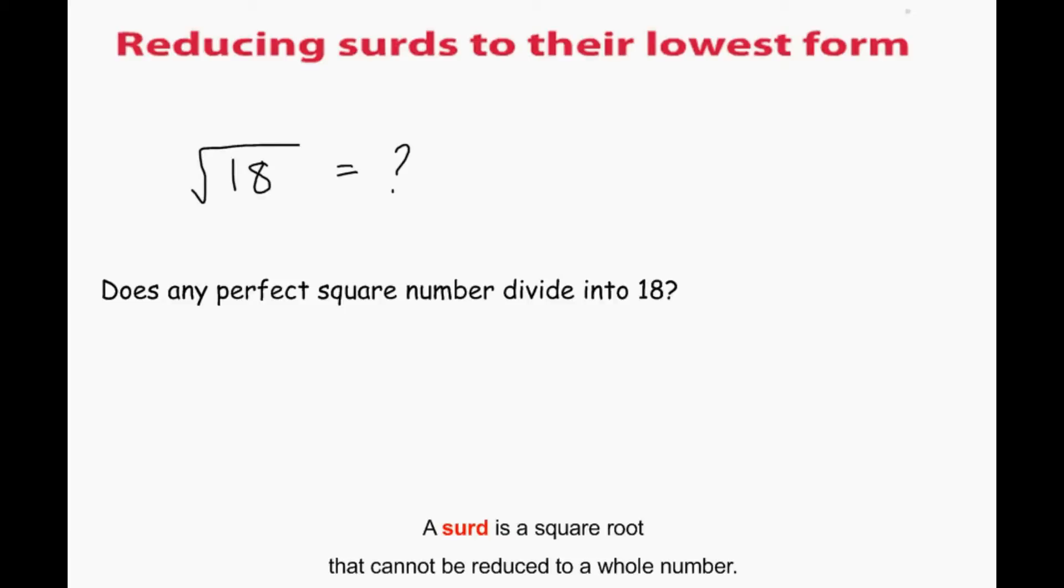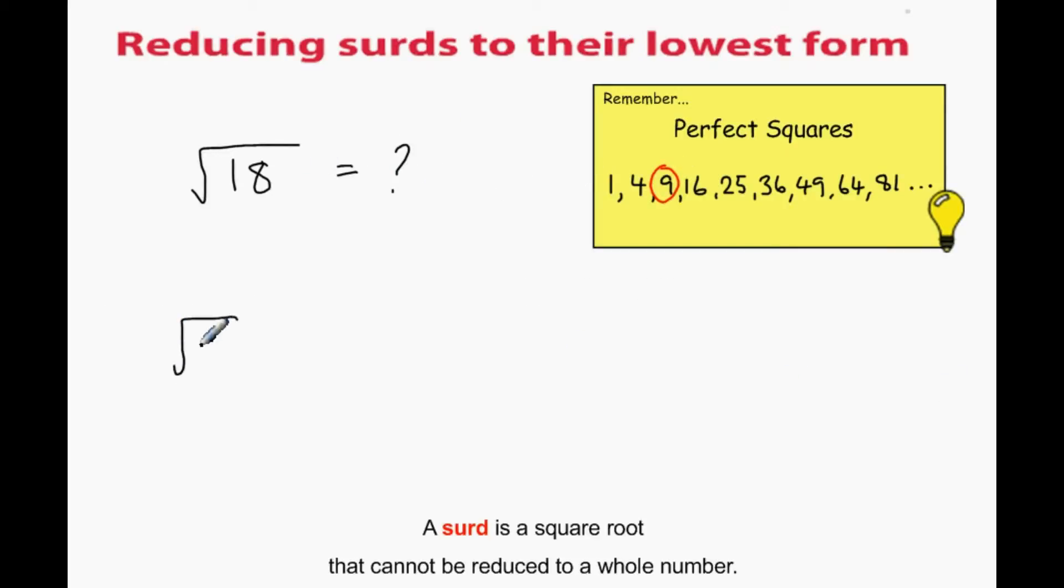How would we reduce root 18? We'd ask ourselves, does any perfect square number divide into 18? Well, 18 is two 9's, so we could rewrite 18 as 9 multiplied by 2. The square root of 9 is 3, so it becomes 3 root 2.